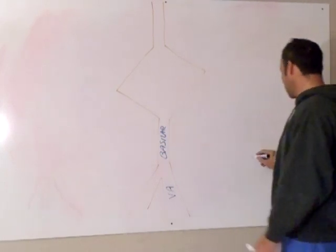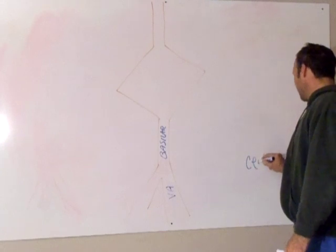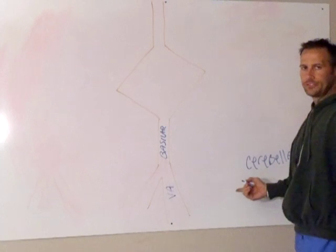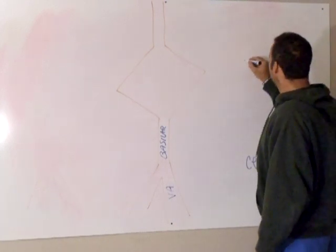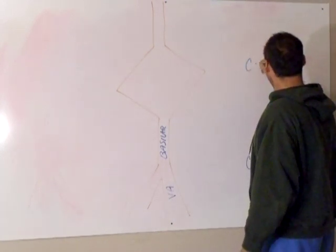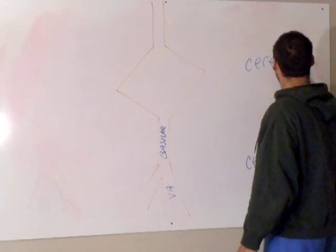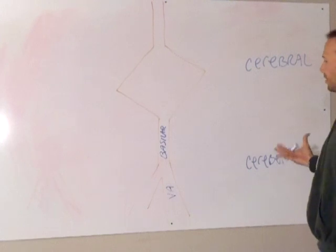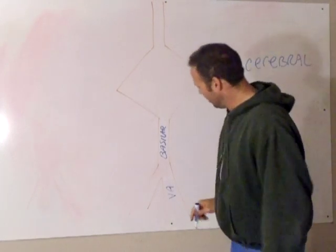What I like to do first is just write off to the side cerebellar or the cerebellum, which is in the back of the brain, and then up here the cerebral. Because it's so easy to get these confused. You've got to remember cerebellar is in the back and then call everything accordingly.